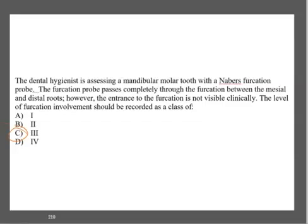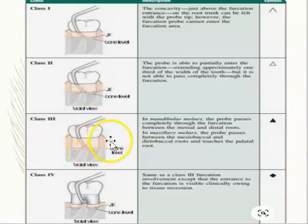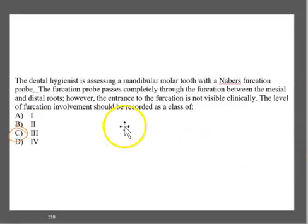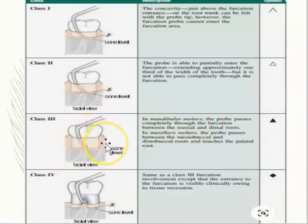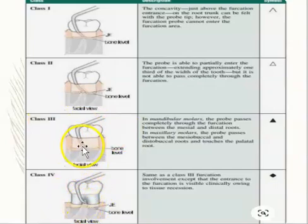If you said C, you'd be correct. If you can thread the Nabers probe through so it goes from the mesial side all the way to the distal and comes out the other side, but the entrance is not visible — meaning the gums cover the furcation — that is class three. Class four is where the furcation is visible; class three it is not. So the answer is class three.